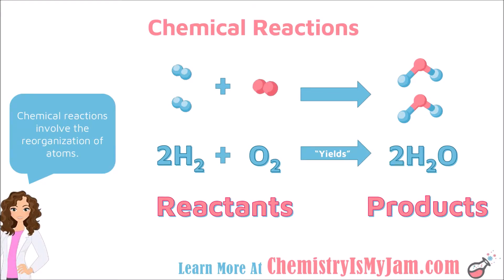Now that we have seen how to recognize when a chemical reaction has taken place, let's take a look at how we represent them. A chemical reaction involves the reorganization of atoms — bonds are going to be broken and new bonds are going to be formed.